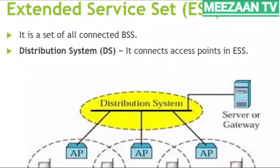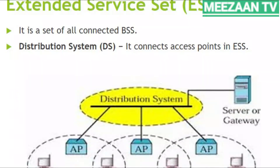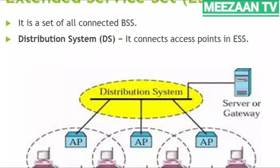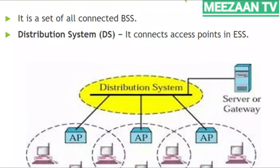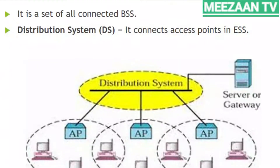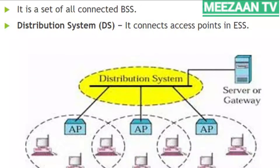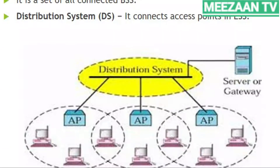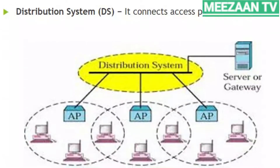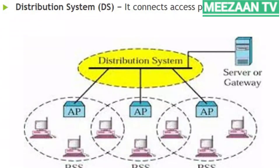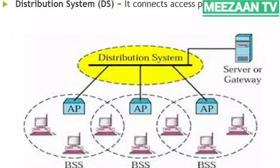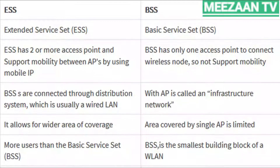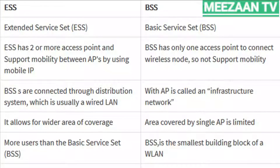The Extended Service Set is made of two or more BSSs with access points. The BSSs are connected through a distribution system, which is usually a wired LAN. IEEE 802.11 does not restrict the distribution system — it can be any IEEE LAN. The ESS uses two types of stations: mobile stations inside a BSS, and stationary stations which are access point stations part of a wired LAN.